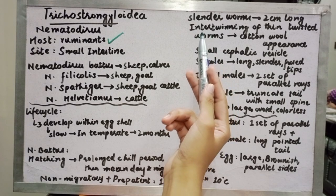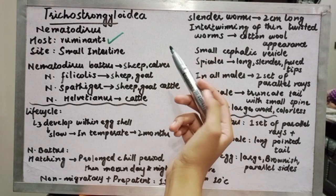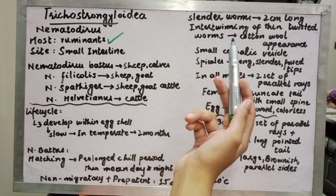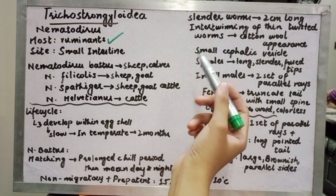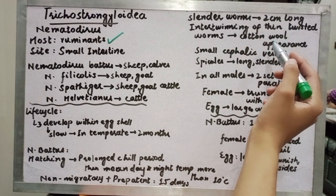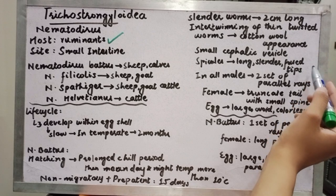They are cylindrical worms, approximately two centimeters long. They have thin, twisted bodies, giving them a cotton wool-like appearance when present in large numbers.